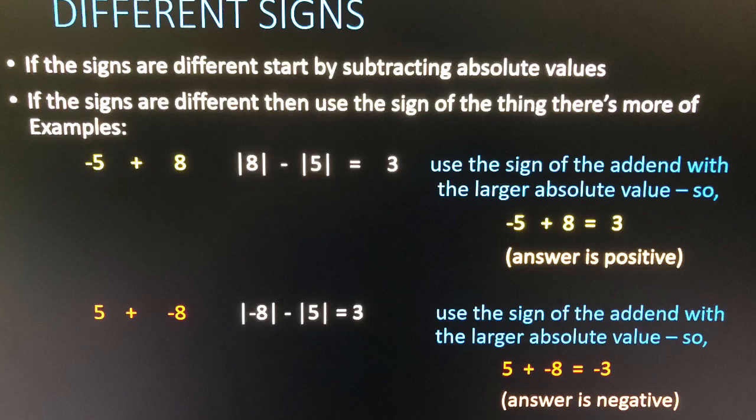If the signs are different, start by subtracting absolute values. If the signs are different, then use the sign of the thing there's more of. Now you've found a sum, and now you've found a sum with integers, it's alright.